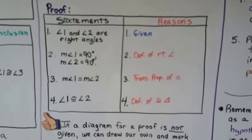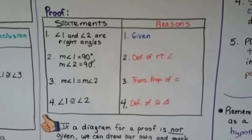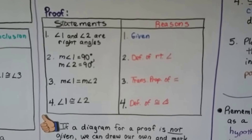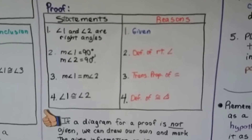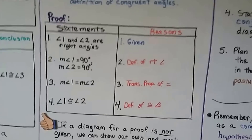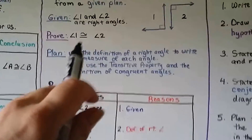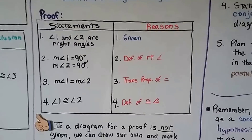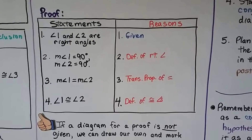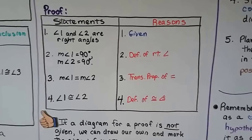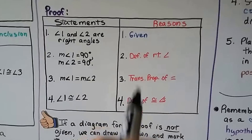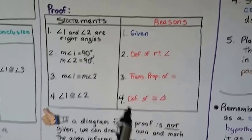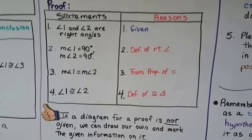Our third statement is the measure of angle 1 equals the measure of angle 2 — that's the transitive property of equality. Statement four is our proof: angle 1 is congruent to angle 2. Our reasoning is the definition of congruent angles. See the abbreviations: definition of right angle, transitive property of equality, definition of congruent angles.